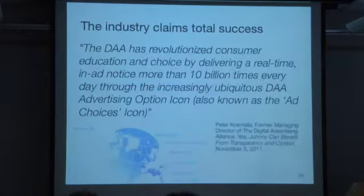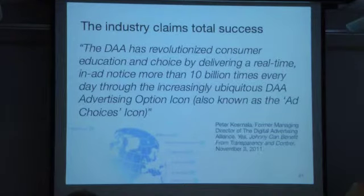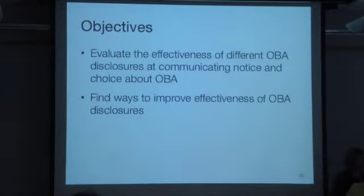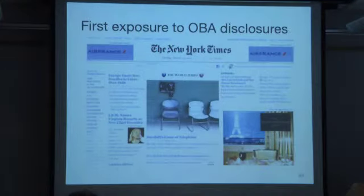Real quick, one more study. Going back to the little triangle Ad Choices icon, which the ad industry has been going on and on about — they claim it's served 10 billion times a day and they're helping people with it. That was their response to our first paper where we said people couldn't use it — we had 48 participants and they said 'what do you know, you only had 48 participants.' So we said fine, we're going to do a big study with 1,500 participants using Amazon Mechanical Turk, to find out if people know about this icon. We showed them the New York Times website with ads that had the Ad Choices icon in the corner, without telling them explicitly it was there, and had them look at it and answer some questions about the page.